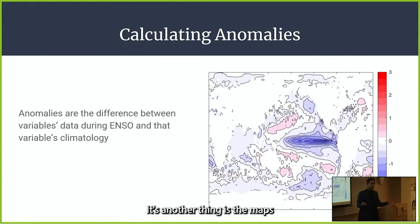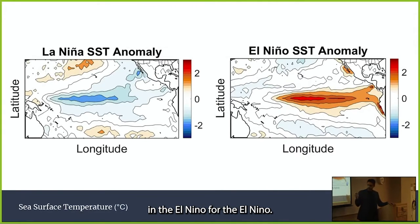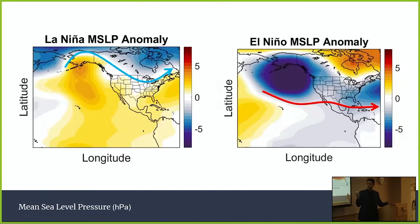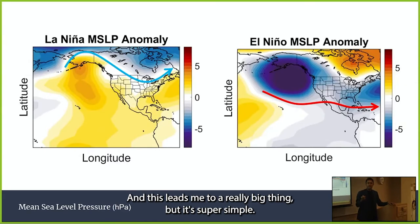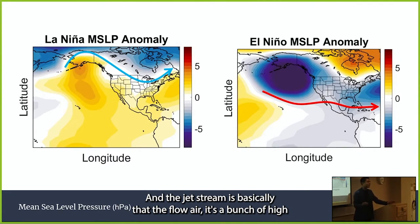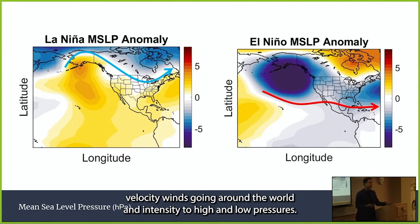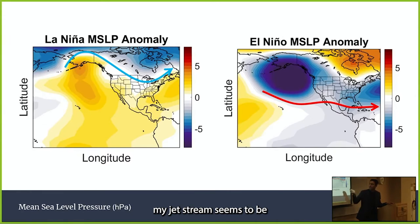Looking at the maps: naturally, for La Niña it's cooler in the tropical Pacific, and warmer for El Niño. These changes in temperature affect pressure in the water, which leads to a really important concept — the jet stream. The jet stream is the flow of high-velocity winds going around the world, driven by the intensity difference between high and low pressures. The arrows on my maps show where I estimated the jet streams to be during ENSO events.